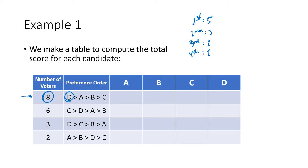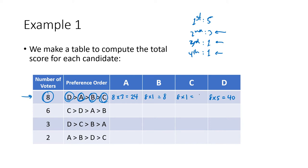Eight ballots on which D gets five points works out to 40. A is listed in second place on those ballots, and second place is worth three points, so A gets eight times three, which is 24. B is in third place worth one point, so that's eight times one, which is eight. And C is in last place — fourth place is also worth one point — so that's also eight times one, which is eight. You're multiplying the number of voters times the number of points that candidate got for those kinds of ballots.